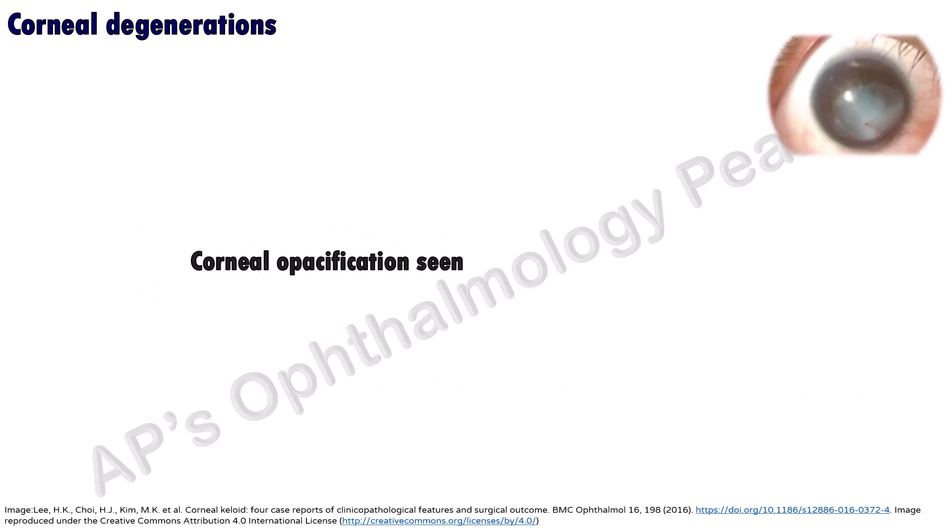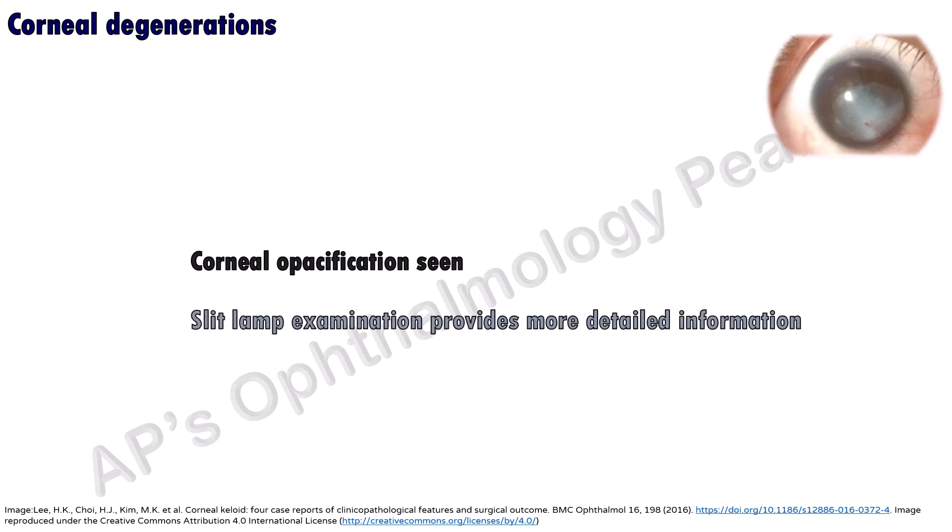Corneal degenerations are readily visible as opacification of the cornea. Details of depth of involvement and other features may be visualized with a slit lamp.